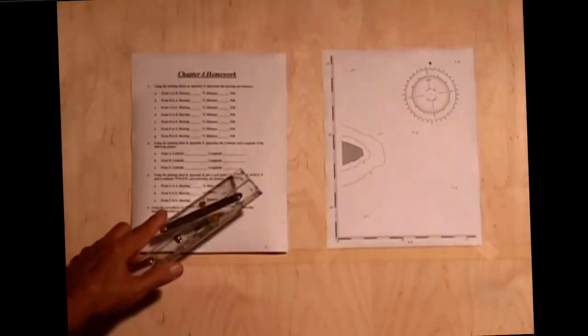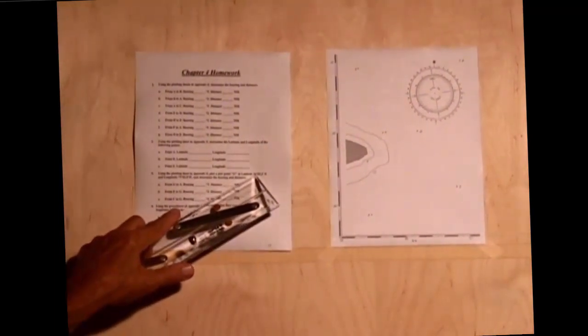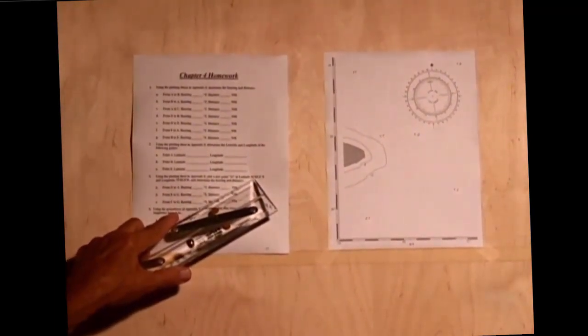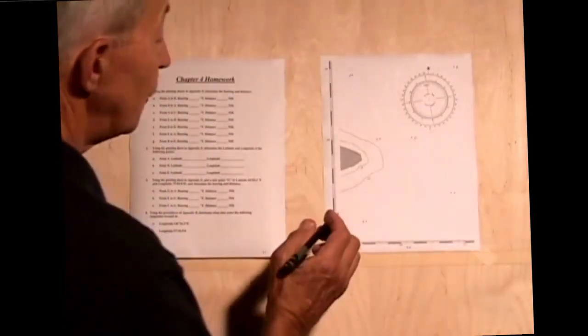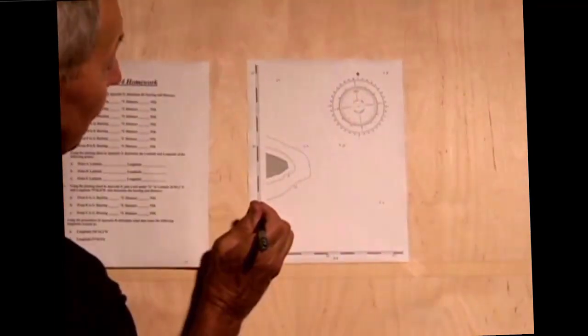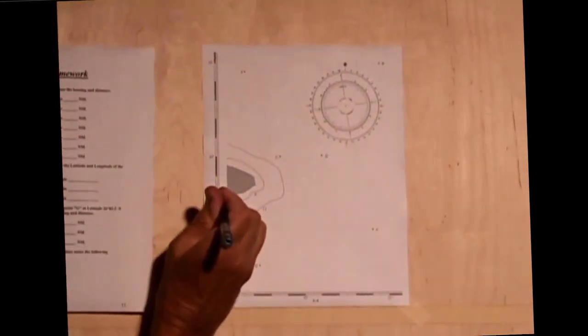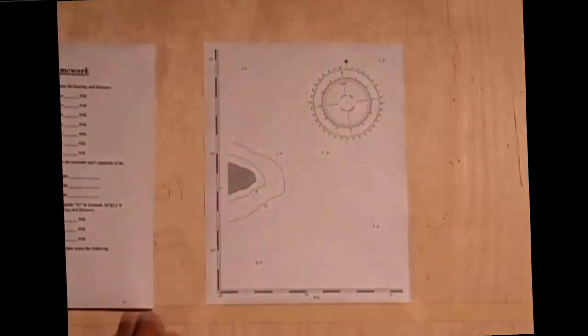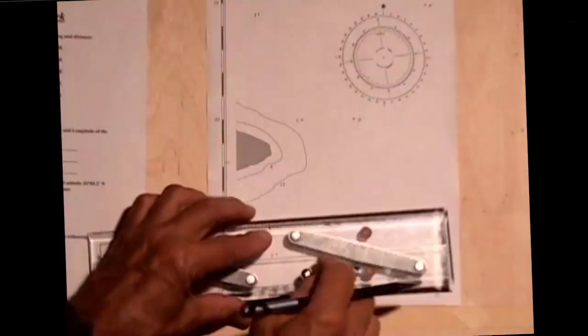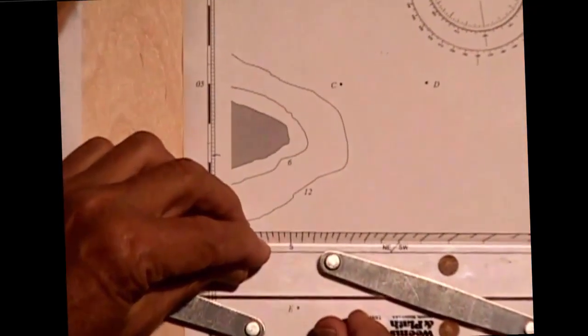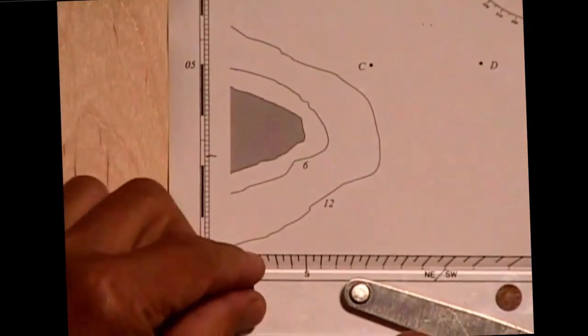So we're going to start out, we want to plot latitude 26°03.2'. So here is 26°01', 02', 03.2'. And we want to take our parallel rules and project that line over.